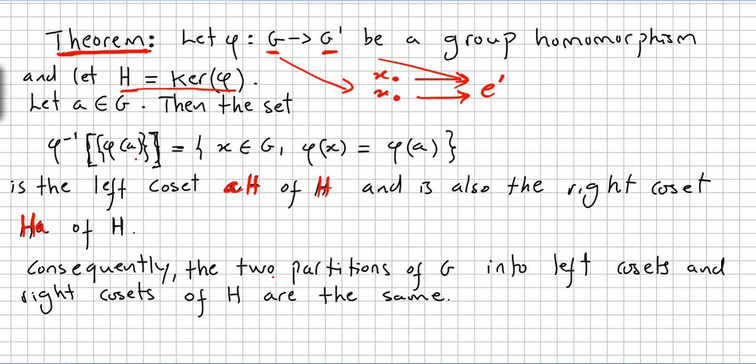Consequently, the two partitions of G into left cosets and right cosets of H are the same. So we have a given group, and this is partitioned somehow in H, and then we will have A·H, etc. But I don't want to get into this. I want to get directly into the corollary of this very important theorem.